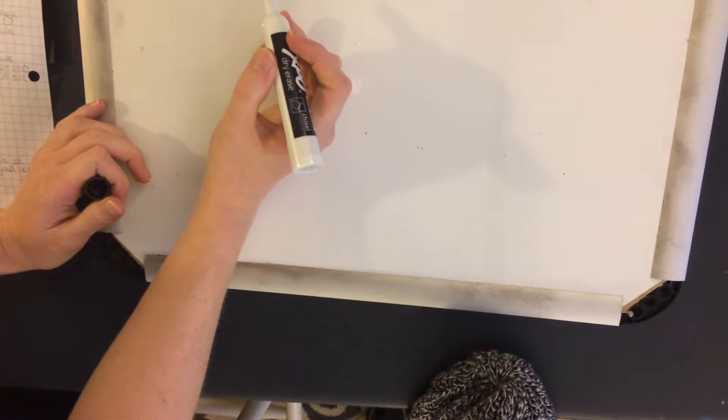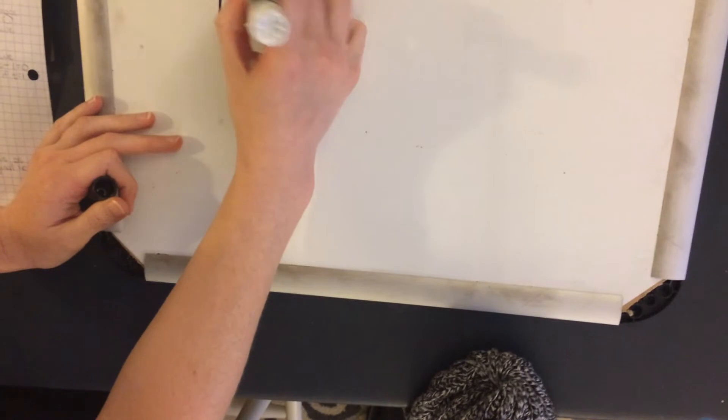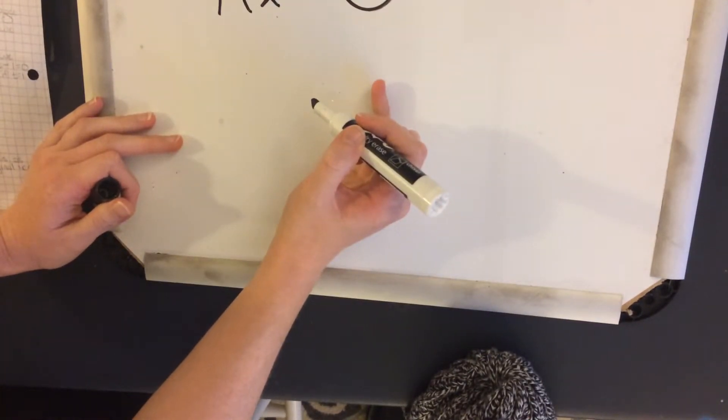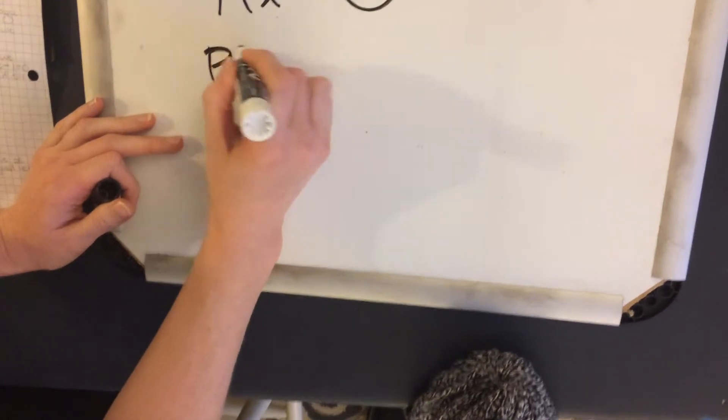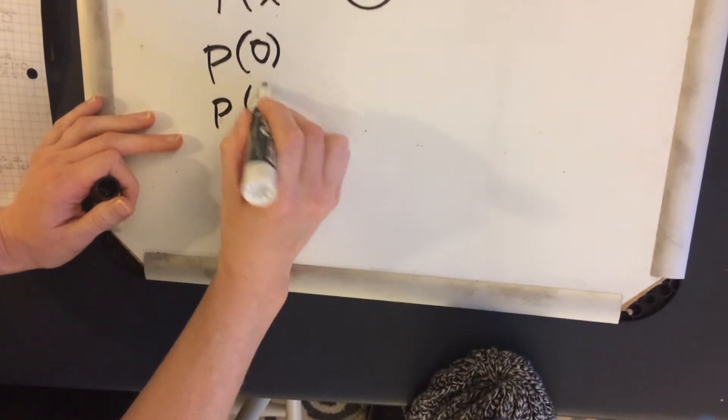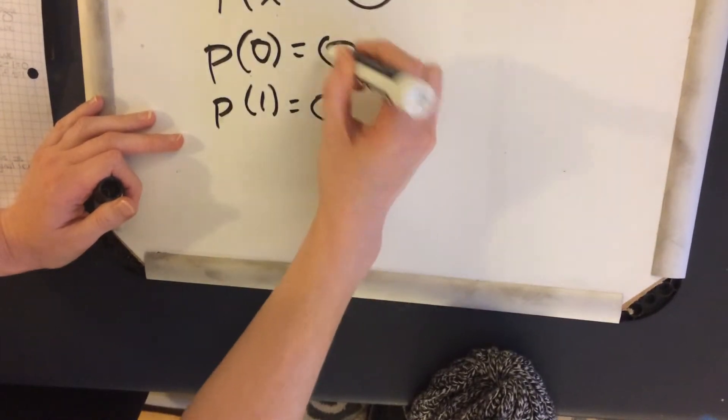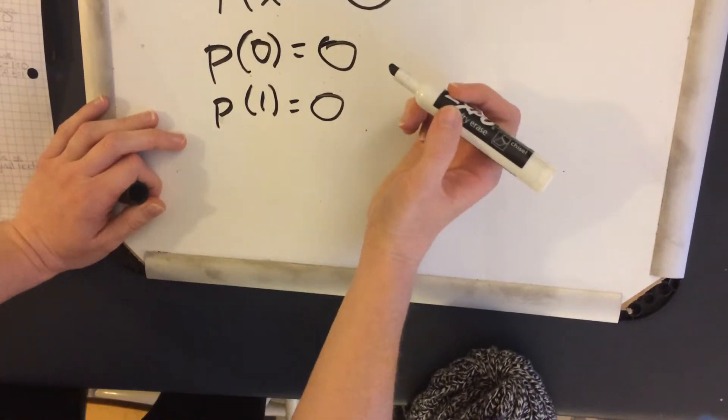So looking at a null space, we're trying to set our equation as this. And we want to get our zero vector out. And we have p of zero and p of one. And so we both want these equations to equal zero. And that would define this null space we're looking for.